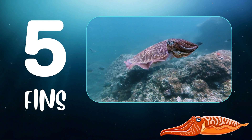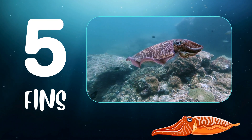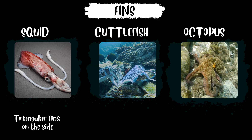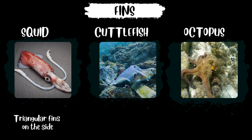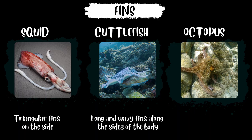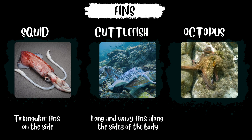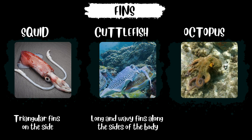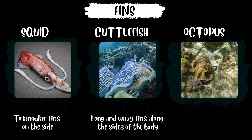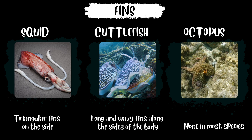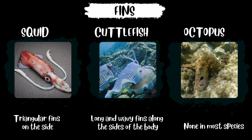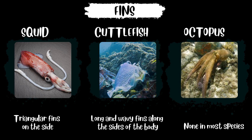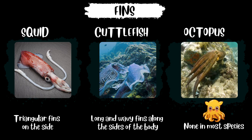Number five, fins. Squid has triangular fins on the side. Cuttlefish has long and wavy fins along the sides of its body. An octopus has none in most species, except for the Dumbo octopus.